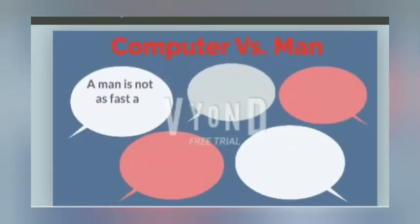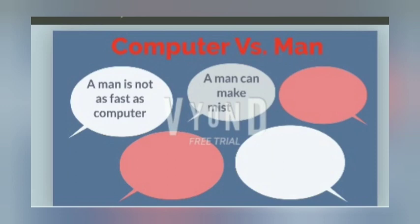Now, see the difference between computer and man. A man is not as fast as the computer — computer works very fast. It makes calculations in nanoseconds. But man takes time to work. A man can make mistakes while doing calculations or any work, but the computer is always right. Computer works on man's orders; men have to instruct the computer, and according to the instructions, computer works.